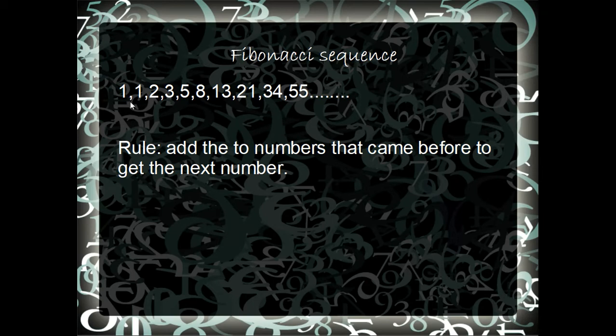And so the Fibonacci sequence is 1, 1, 2, 3, 5, 8, 13, 21, 34, 55, and like infinitely more. And the rule to getting the Fibonacci sequence is to add the two numbers that came before to get the next answer. So you just put 1 there because you have to start with some. And then 1 plus 0 is 1, and then 1 plus 1 is 2, and then 2 plus 1 is 3, and on and on and on.